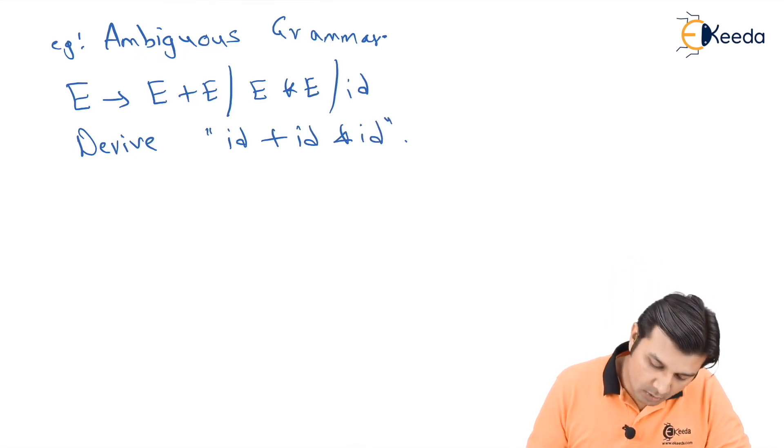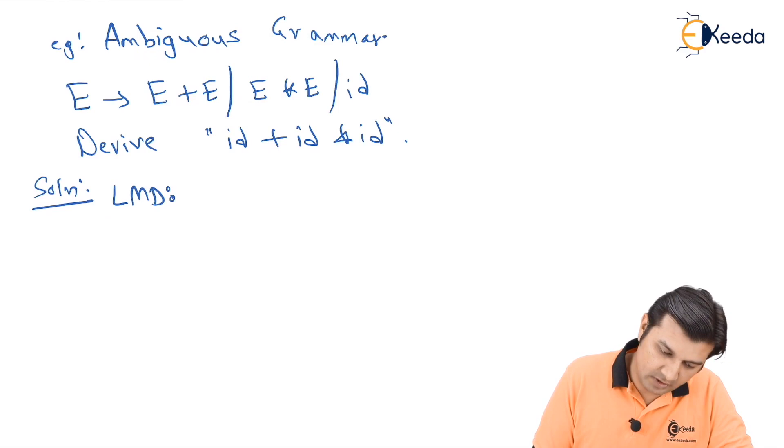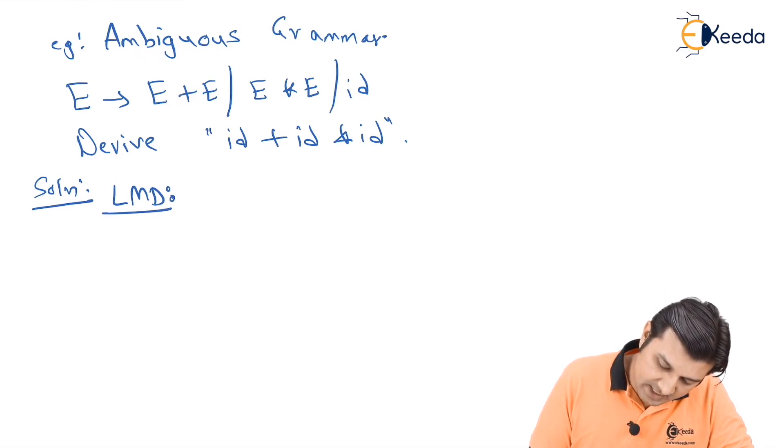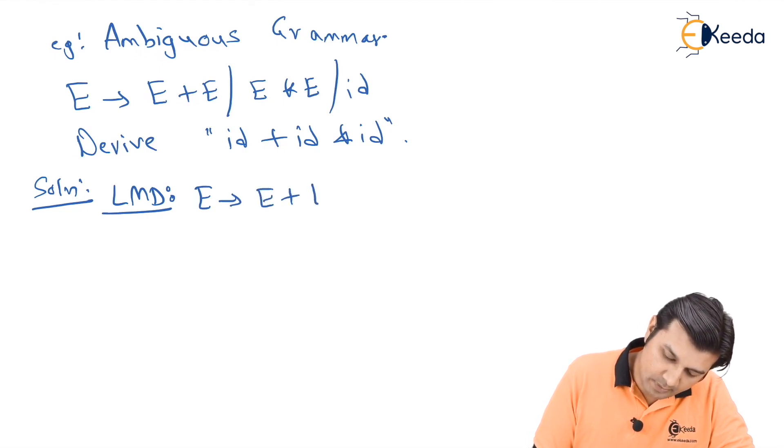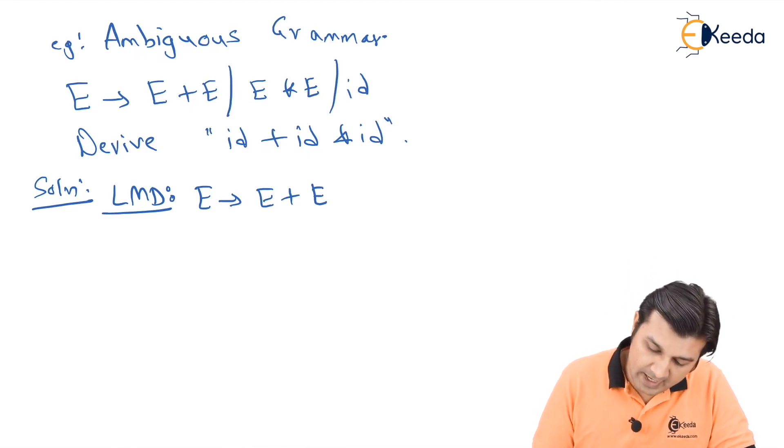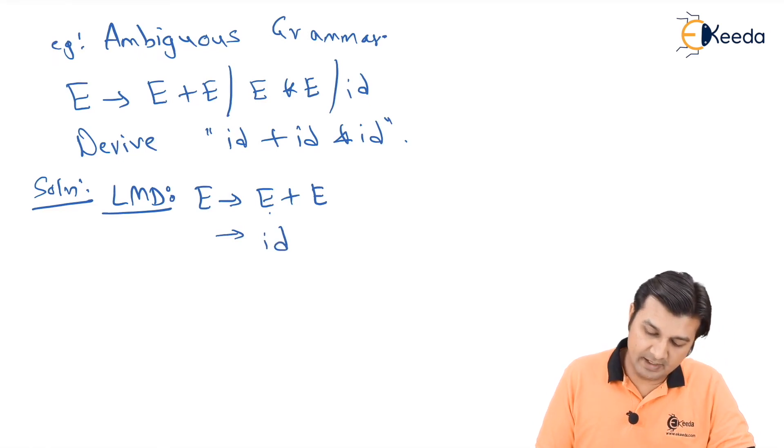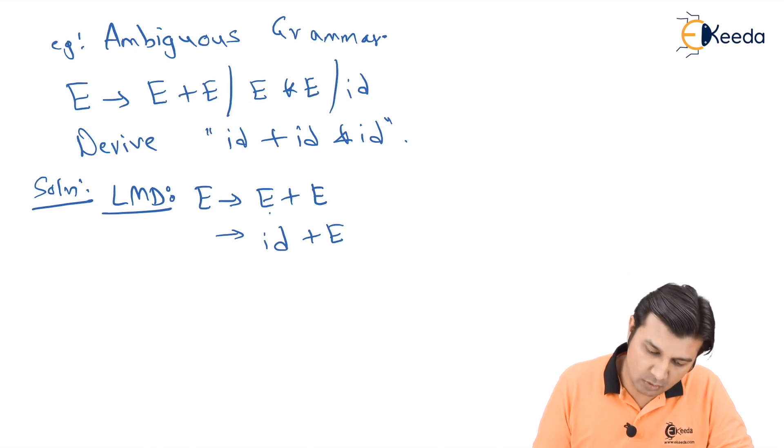Moving on to the solution, let me write the LMD for this. If I want to derive the above string, I can start with E → E+E. Further, since I am doing LMD, I say let this E be replaced by id, so id + E remains.